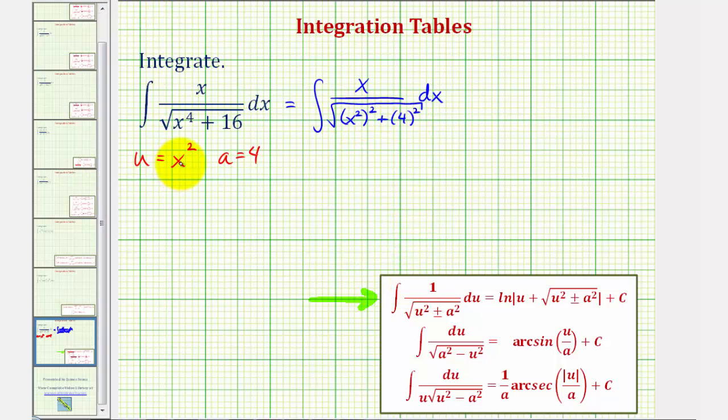But because u is equal to x squared, notice differential u or du is equal to 2x dx. This is actually good news because the integrand has this extra factor of x. So if we divide both sides by two here, notice that one-half du is equal to x dx.